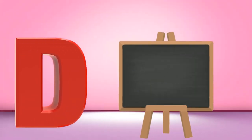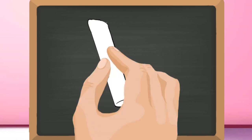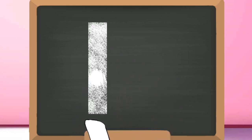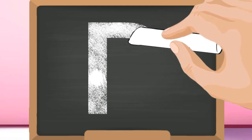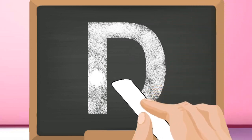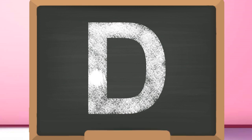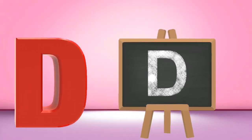D, capital D. Start from the top and draw a standing line down. Go again to the top and draw a curve till the bottom. Capital D.